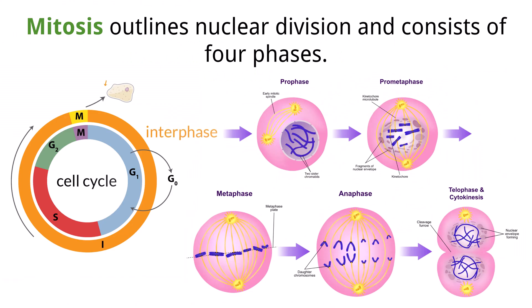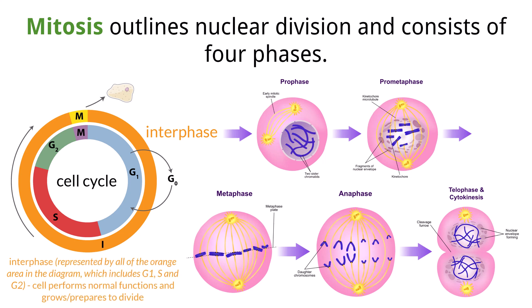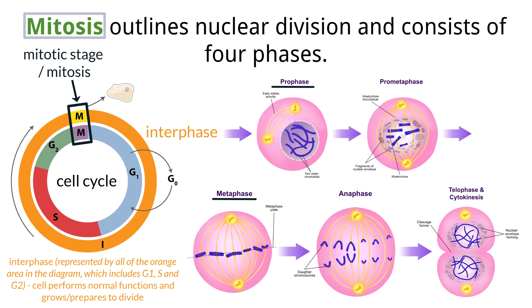Interphase is the term used to describe the cell when not undergoing cellular division. During interphase, the cell is undergoing normal cell functions such as cellular respiration and protein synthesis, as well as growing and preparing to divide. Mitosis is the process that will produce two genetically identical daughter cells and consists of four phases: prophase, metaphase, anaphase, and telophase.